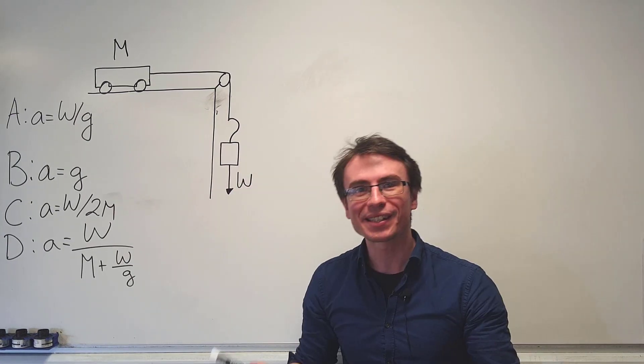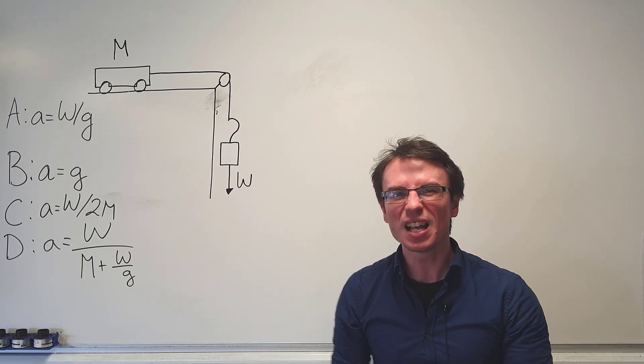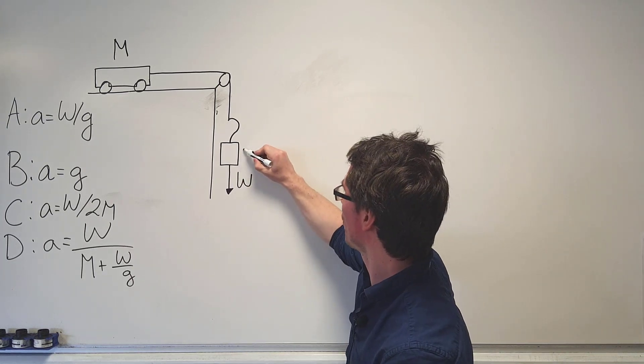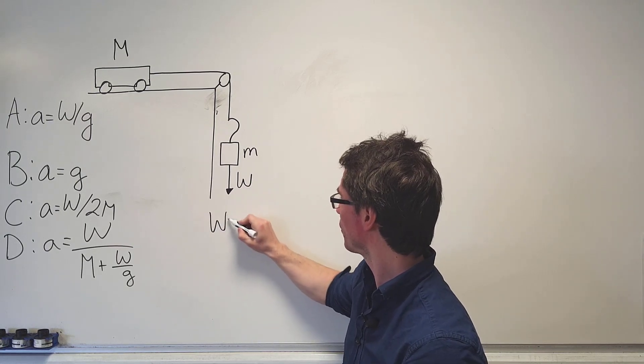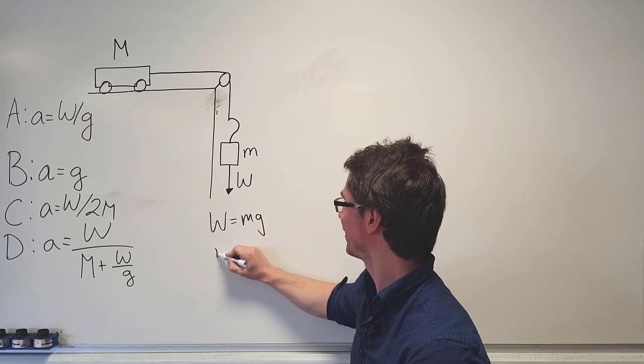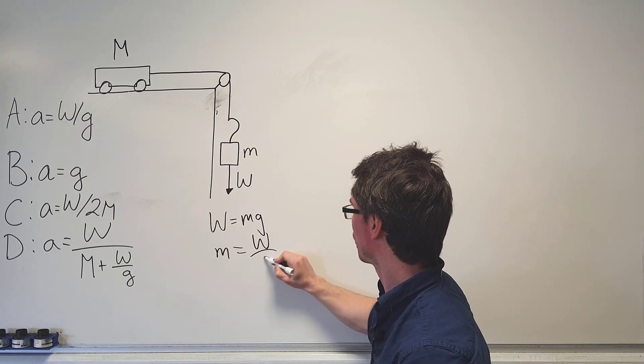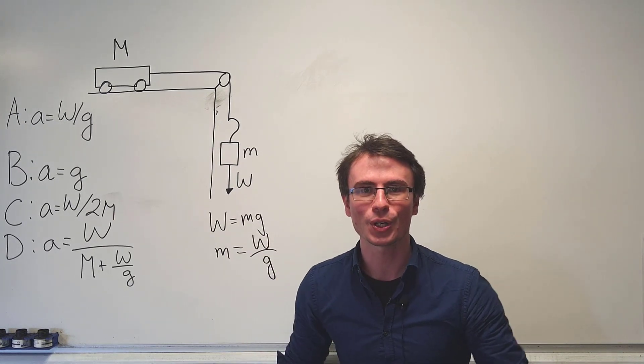We're not given the symbol for this mass here. However, just for simplicity I'm going to call this little m, and because w equals mg we know that this mass will be equal to w over g.